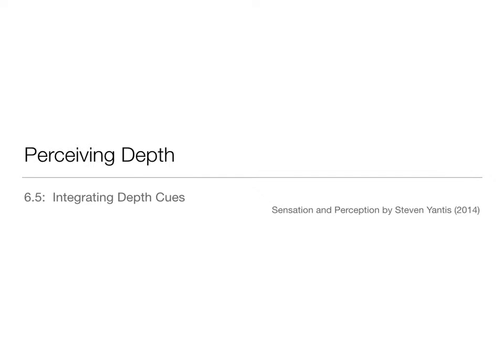Dr. Atchison here talking about Chapter 6, Perceiving Depth. We're on our last section where we're going to talk about integrating those depth cues, and we're going to talk about some illusions.